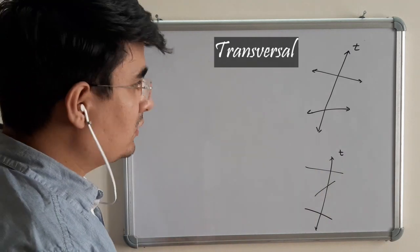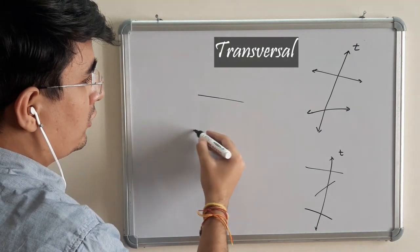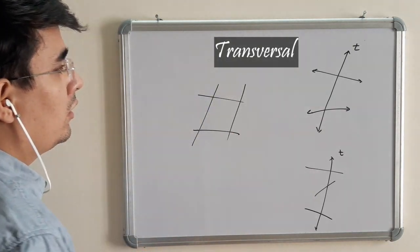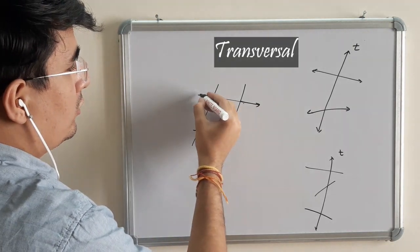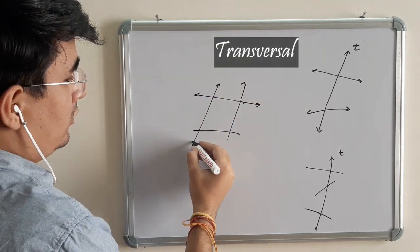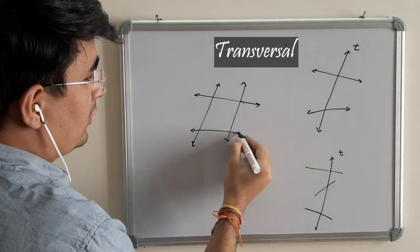So can a figure have multiple transversals? Yes. Think about this way. Now the hashtag, you know, the hashtag has multiple transversals.